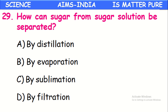How can sugar from a sugar solution be separated? Options: distillation, evaporation, sublimation, filtration. Sugar can be obtained from the sugar solution by evaporation. Distillation can also collect both sugar and water, but since only sugar is needed, the simpler process is evaporation. By evaporation we can get back sugar — that is the preferable answer here.